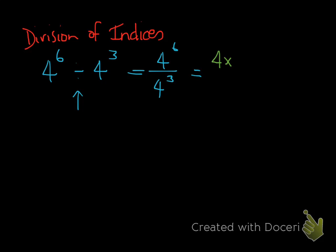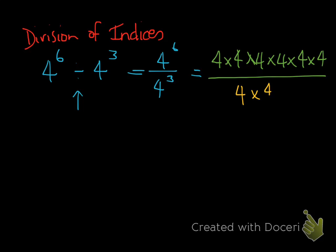4 to the power of 6 means 4 multiplied by itself 6 times: 4 times 4 times 4 times 4 times 4 times 4. I'm going to place this over 4 to the power of 3, which in expanded form is 4 times 4 times 4. So we have 4 to the power of 6 in expanded form on top, and 4 to the power of 3 in expanded form on the bottom.